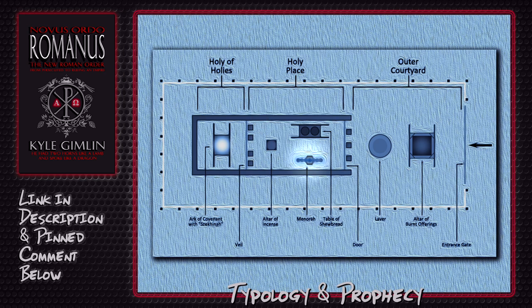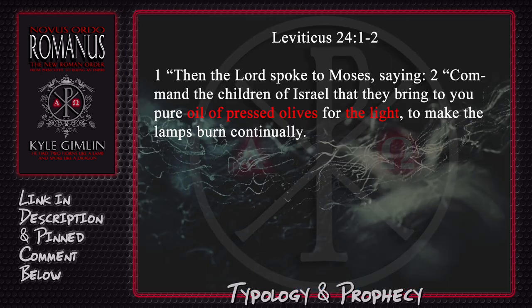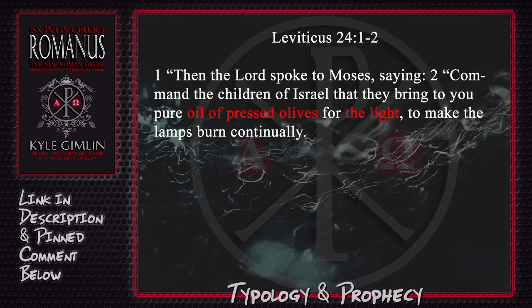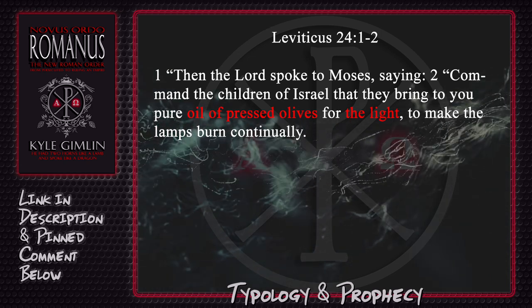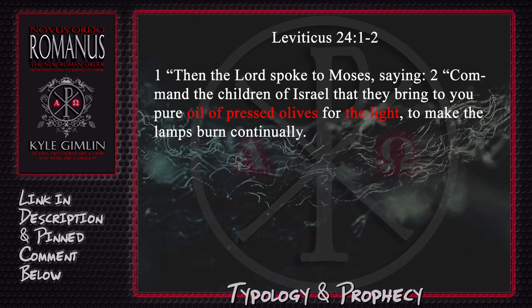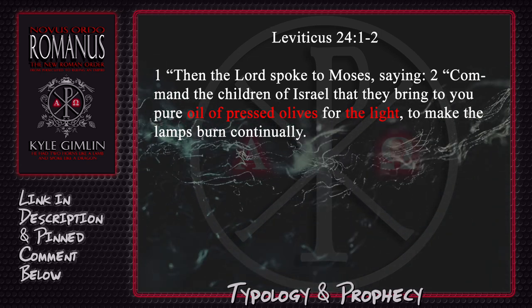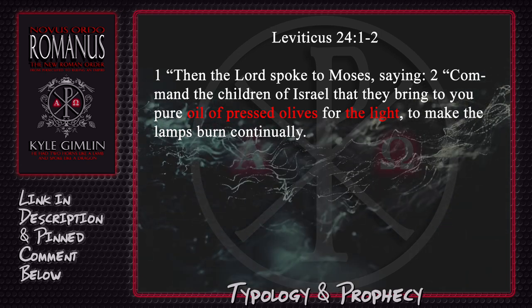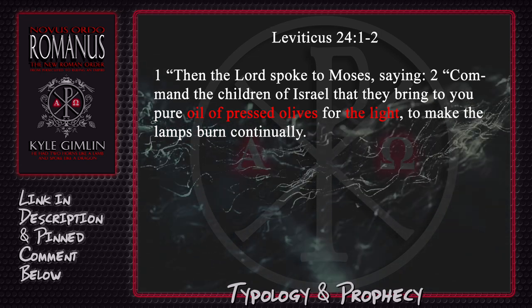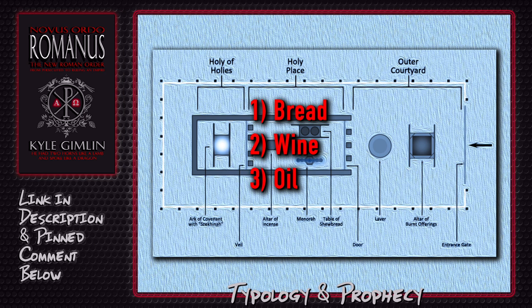What about the golden lampstand? Besides the fact that there were seven candlesticks in total, we need to ask what was inside the lampstands — the fuel used to keep the lamps burning. We find the answer in Leviticus chapter 24: 'Command the children of Israel that they bring you pure oil of pressed olives for the light, to make the lamps burn continually.' So the answer is olive oil. Based on the table of showbread and the golden lampstand, what we have established as the defining typology of the holy place is bread, wine, and oil.